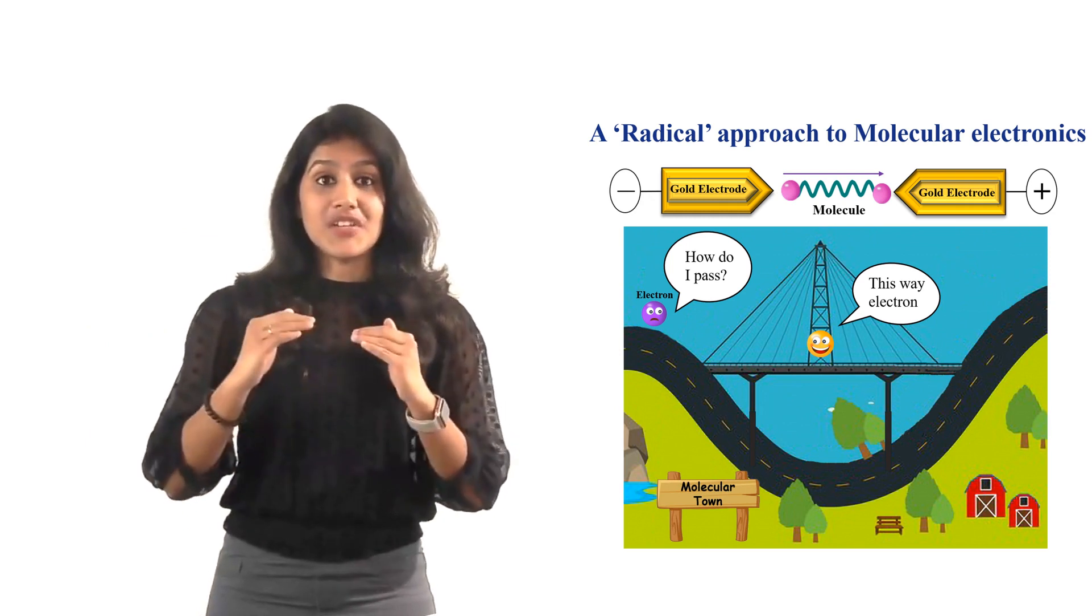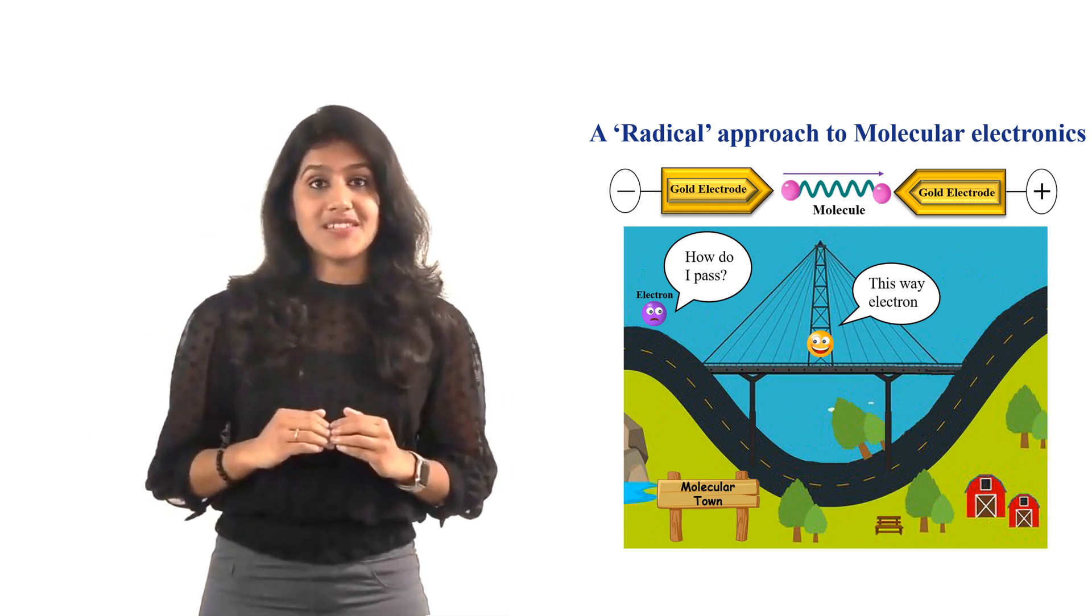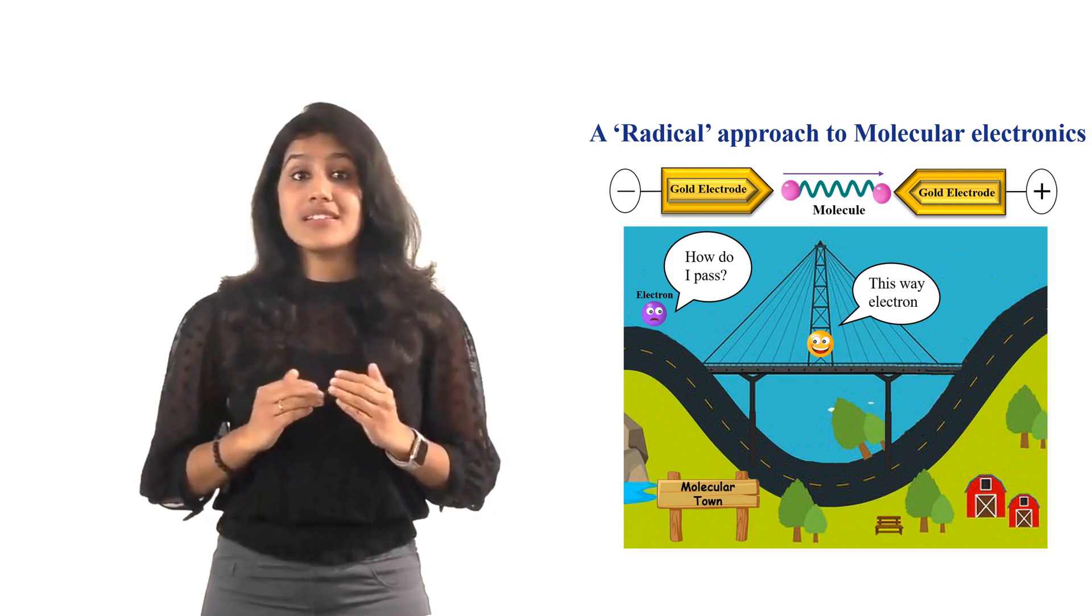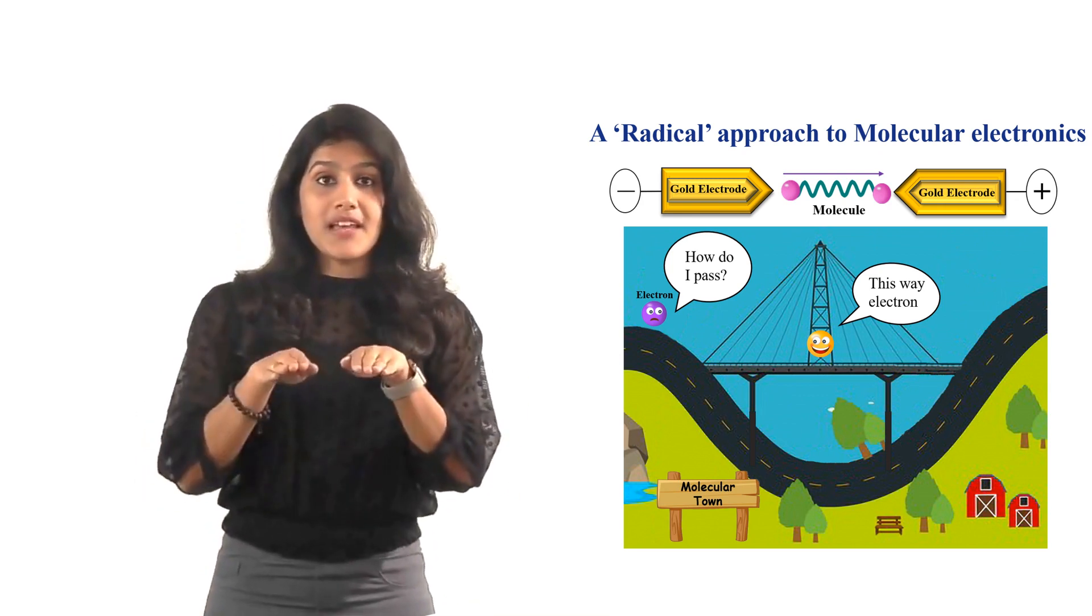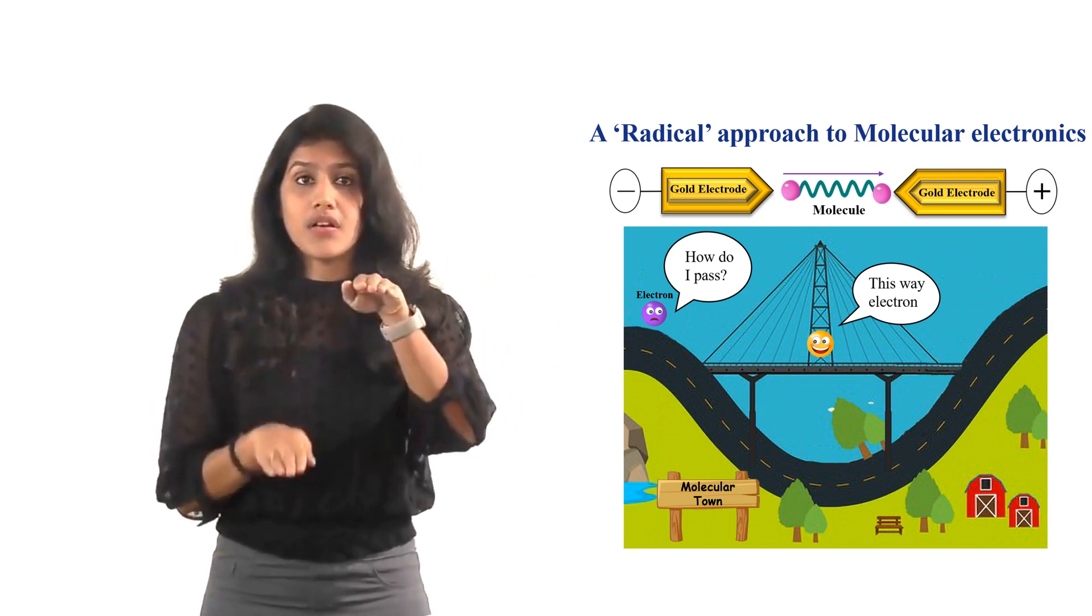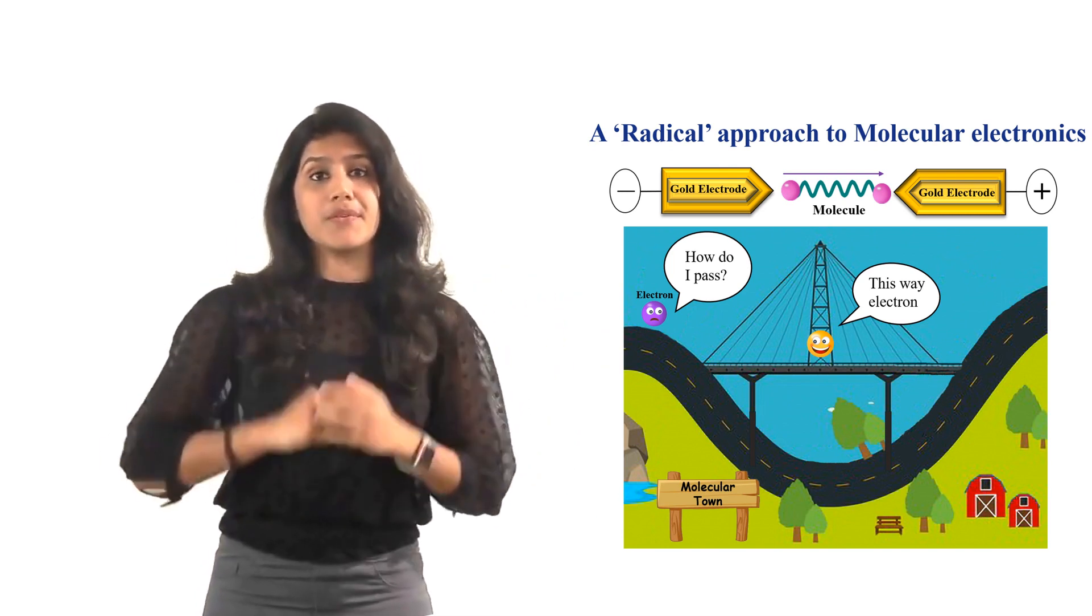Molecules have little energy levels where they house their electrons. These levels can also act as a bridge for electrons to pass through. When these levels are properly aligned electrons can easily pass. When they are not aligned electrons have to take a bumpy road.